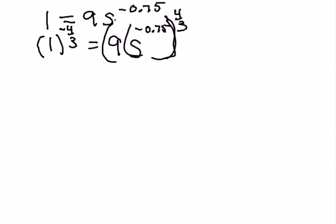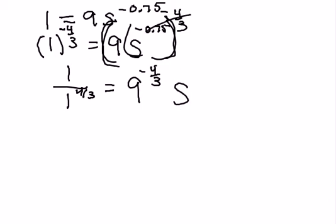Okay, so that's going to give me one over one to the four-thirds power, which equals nine to the negative four-thirds power, and then I'm left with just S because these are going to cancel each other out. This is one over nine to the four-thirds times S. We can cross multiply, so I have S equals nine to the four-thirds.